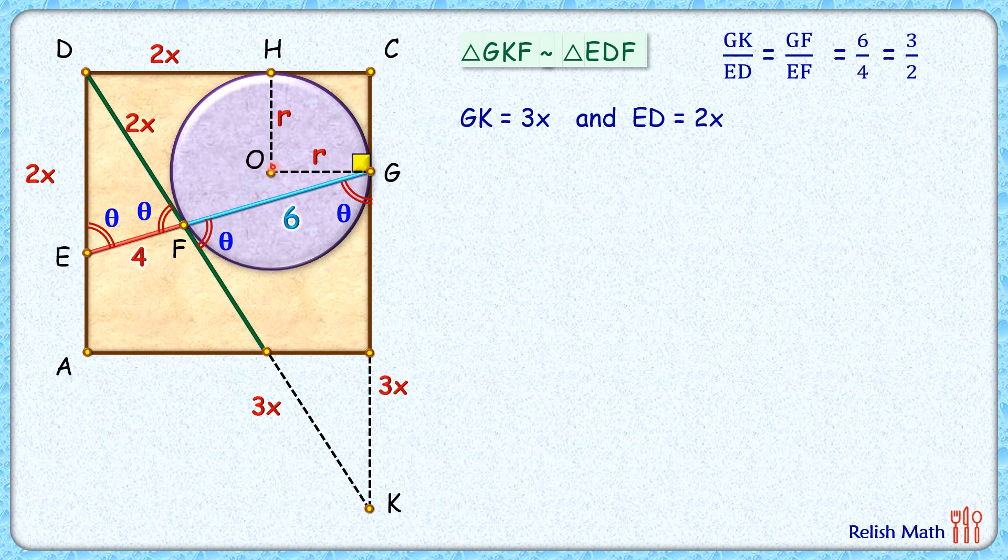So OG length will also be r. CG length, if you look carefully, this figure formed here is a square as all the angles are 90 degrees and adjacent sides are equal. So CG length will be r centimeters, HC length will also be r centimeters.